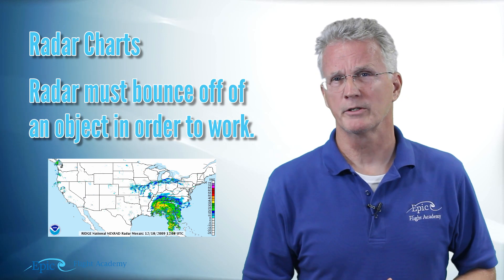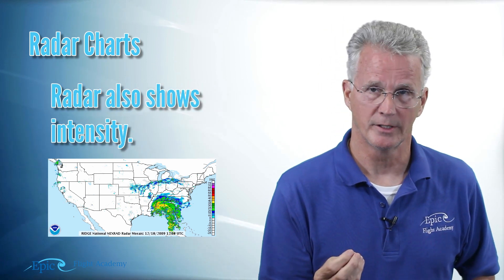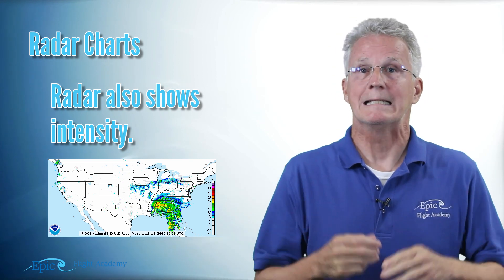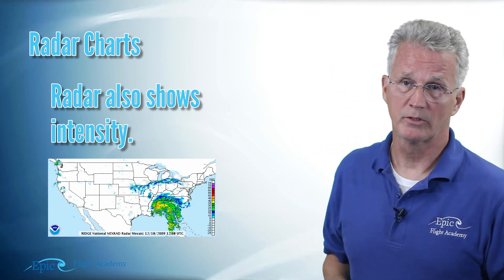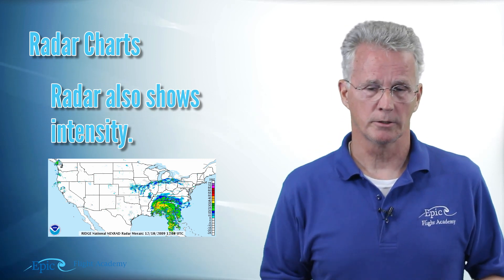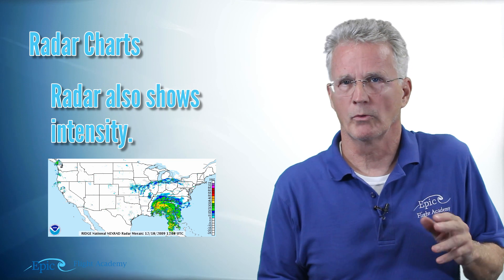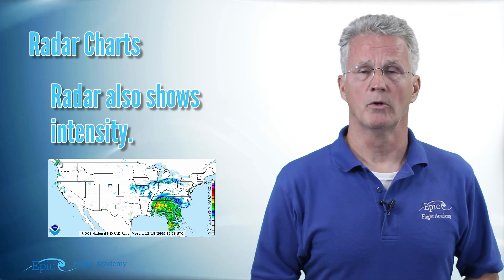And these radar charts are also going to show us intensity. And you'll see that reflected in what meteorologists call the decibel level, the intensity of that return. And this is color-coded for us. And you can see this in our example chart. And you'll see it in the charts that you look at on the website. The lighter intensity are more bluish colors. The medium intensity turns from green to yellow to orange. Higher intensities become red and all the way up into purple. These radar charts also show the direction and speed of movement.